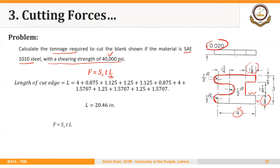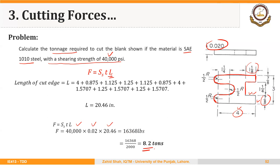The total perimeter works out to 20.46 inches. Multiplying the three factors: 40,000 × 0.02 × 20.46 = 16,368 pounds. Dividing by 2,000 gives 8.2 tons. So we may need a press of 10-ton or greater capacity to perform this operation.